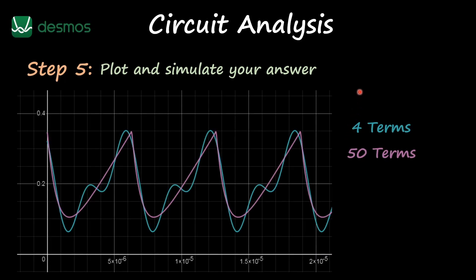I extracted these from Desmos and I'm plotting here just two solutions: one with the four terms, the first four non-zero terms, which is in blue, and then another one with 50 terms. So more terms you get, a better approximation of your final answer. Now let's look at FalSTAD, let's simulate this in FalSTAD and see what we get.